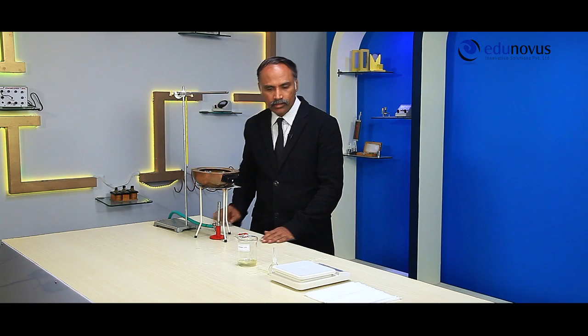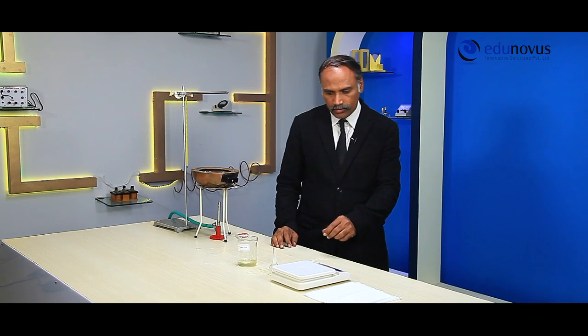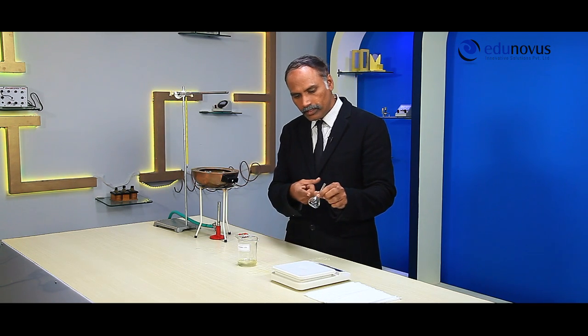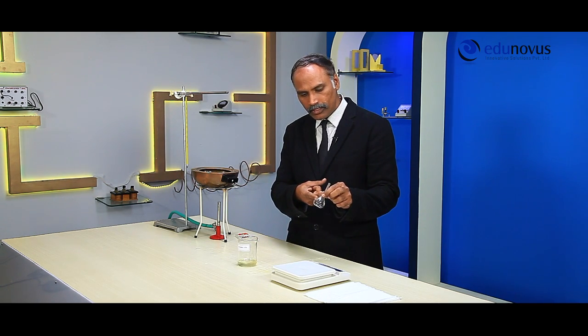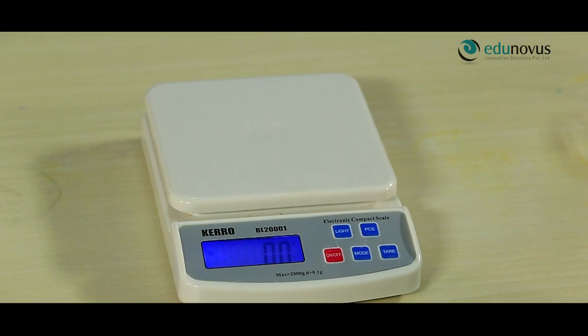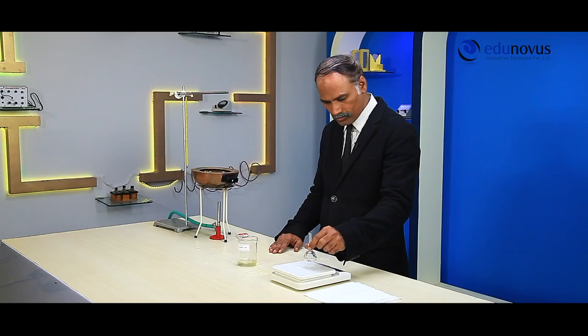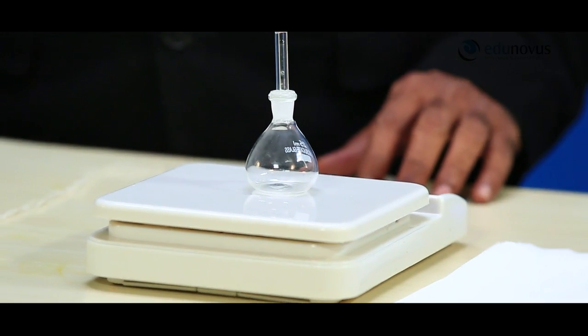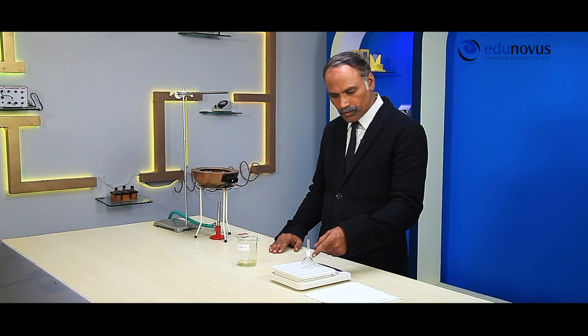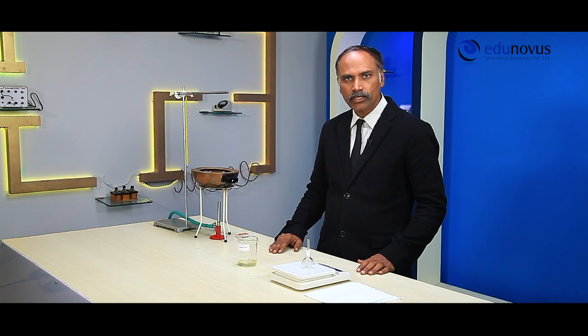After that, take a clean and dry specific gravity bottle and find its weight using a weighing machine. The weight of the specific gravity bottle is 21.5 grams. Note this value as M1.